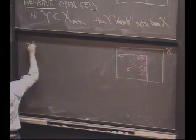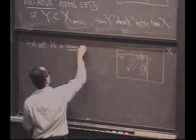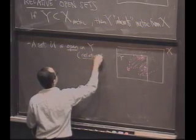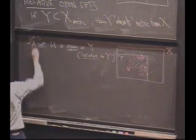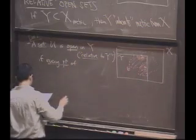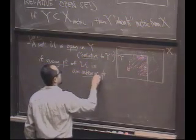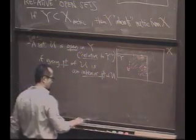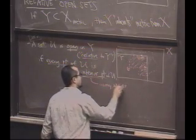So a set U is open in Y. And the book says open relative to Y, you often hear that. If, this is what it means, this is a definition. It's a definition if, right? It's not a conditional if. If every point of U is an interior point of U. And of course, the key difference here is that the notion of interior means using neighborhoods in Y.